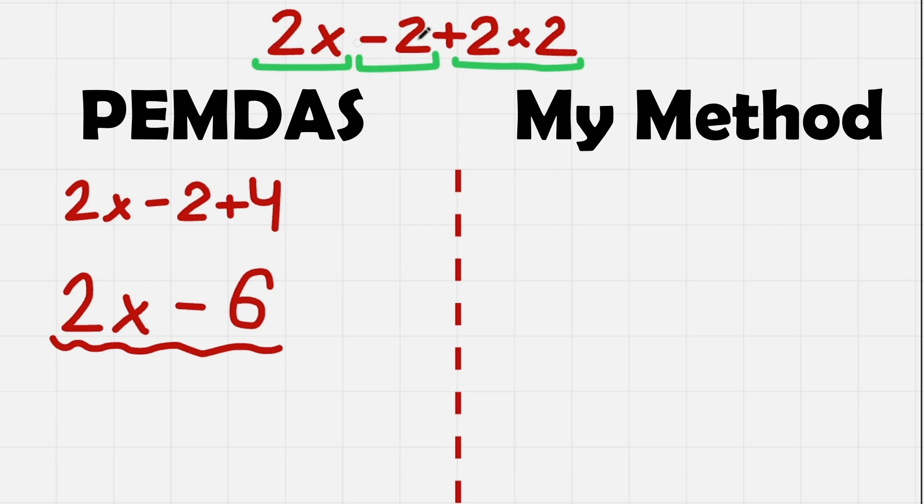We need to calculate each term individually if it is even possible. For example 2x will just stay as 2x. We cannot really do anything because we don't know the x to multiply with 2. Then minus 2 is already a number. So let's write it. And then 2 times 2. This gives us 4. So let's write plus 4.